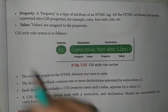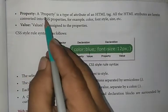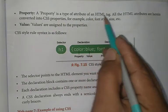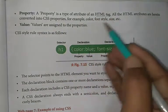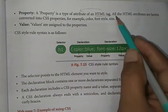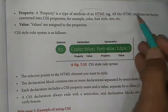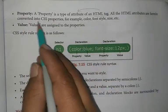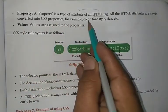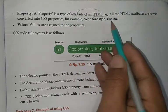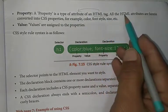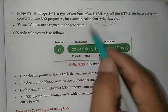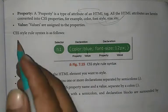The next one is Property. Property is a type of attribute of an HTML tag. All HTML attributes are converted into CSS properties — for example, color, font. All the HTML tags can be changed through CSS.